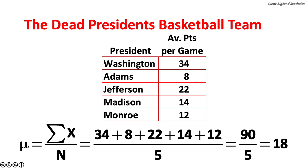five dead American presidents formed a basketball team. The table shows the average points per game for Washington, Adams, Jefferson, Madison, and Monroe. The population mean is 18 points per game.